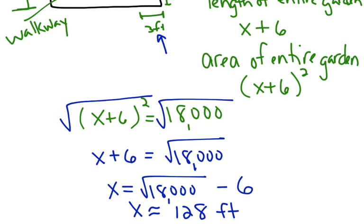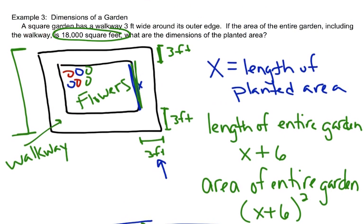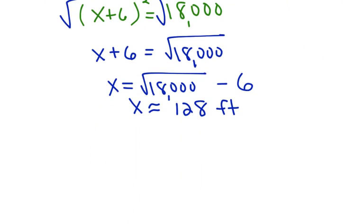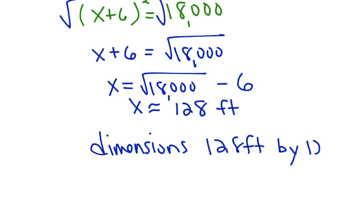So, the question said, what are the dimensions of the planted area? In order to find the planted area, I needed to know X. I know X is about 128. So, the dimensions gets written as 128 feet by 128 feet.